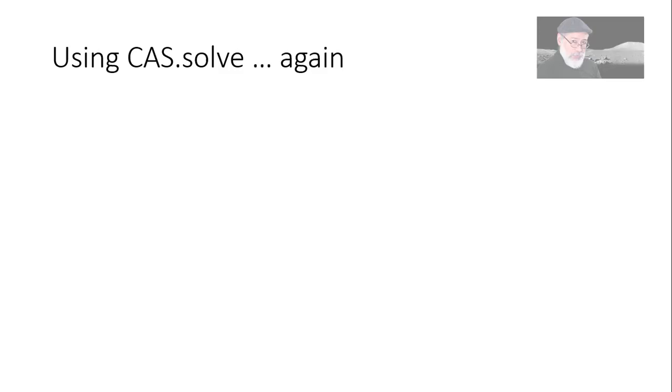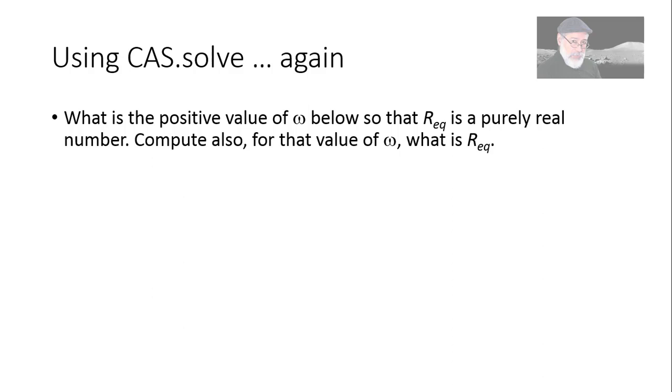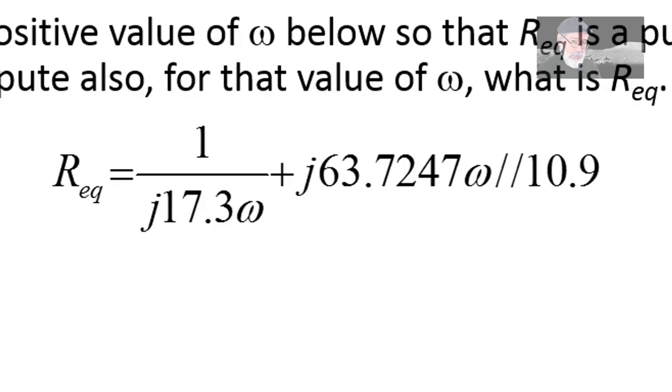Let's use solve again, but this time in a more complicated exercise. What is the positive value of omega in the expression below for Req, so that Req is purely a real number? Also, for that value of omega, compute the value of Req. That is the formula. Req is, you say, what is that? Who is j? j is the imaginary unit. Remember, square root of negative one. We don't use i as in mathematics because i in electrical engineering is current. You're right.